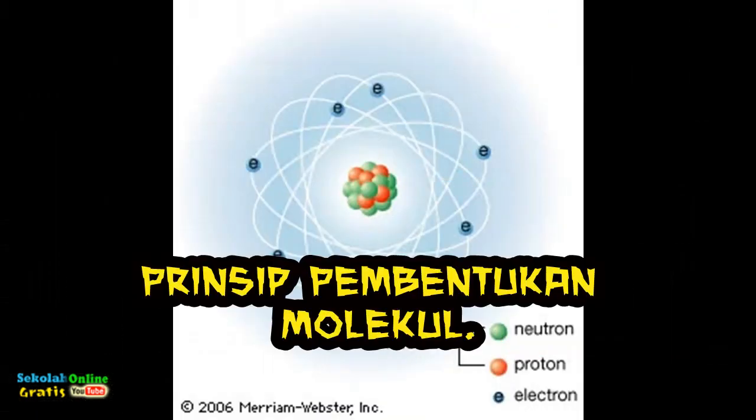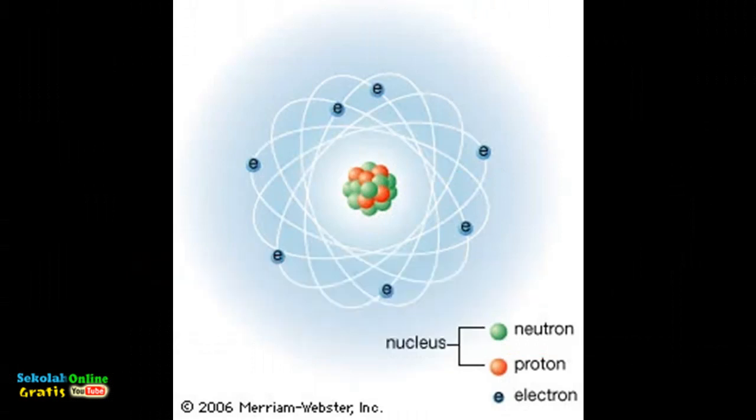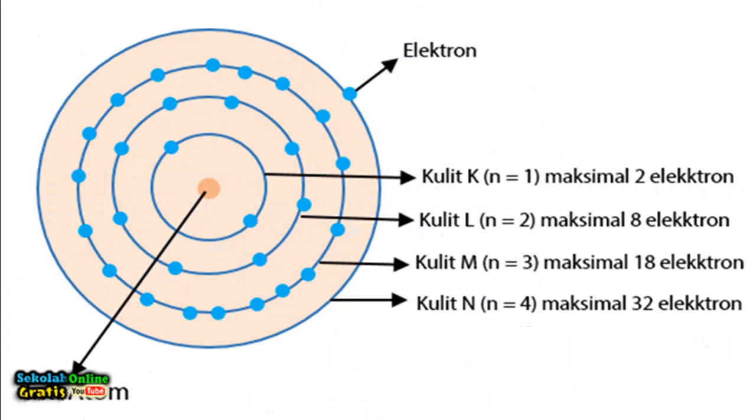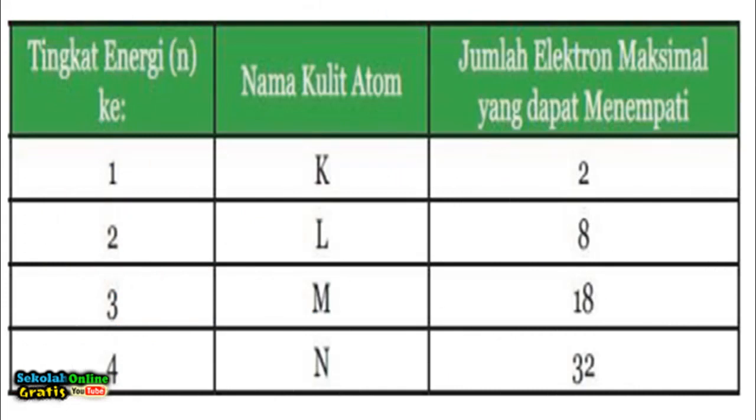The principle of molecule formation. Electron configuration is the arrangement of electrons in an atom, molecule or other physical structure. According to the theory of wave mechanics the energy levels or atomic shells are energy levels K for N equals 1, L for N equals 2, M for N equals 3 and so on. Each atomic shell is occupied by several atoms and has a maximum number of electrons.